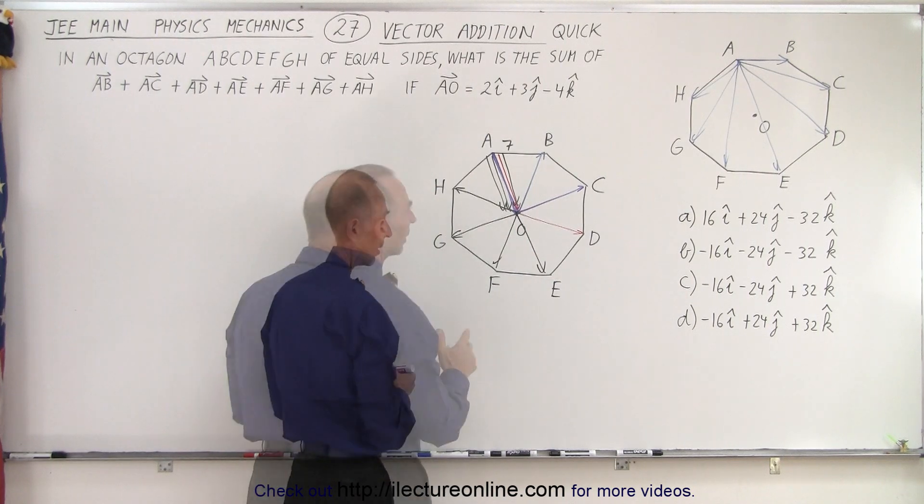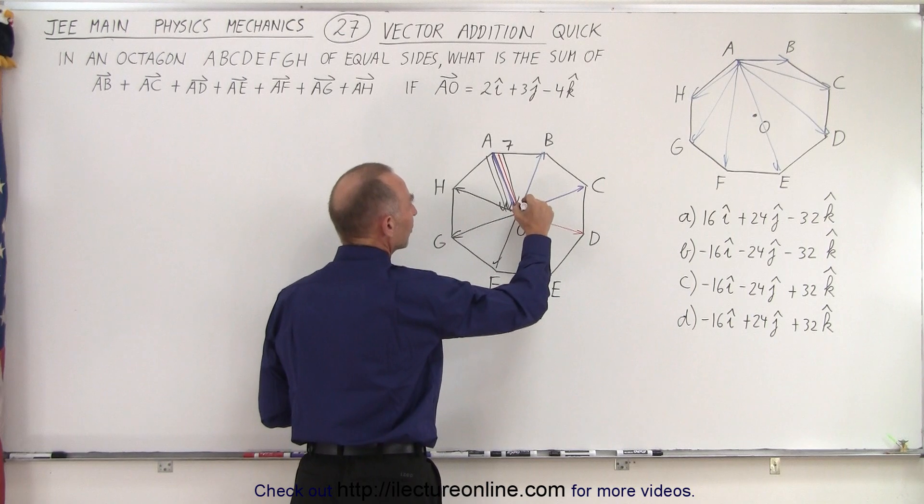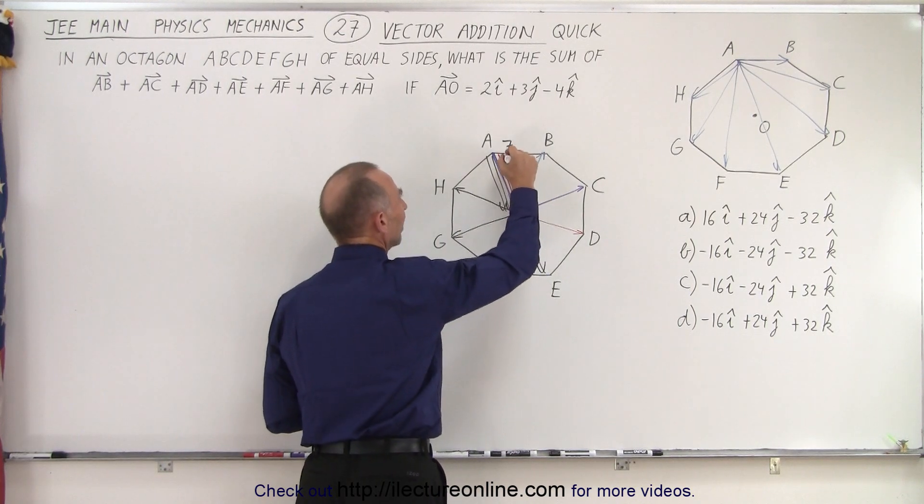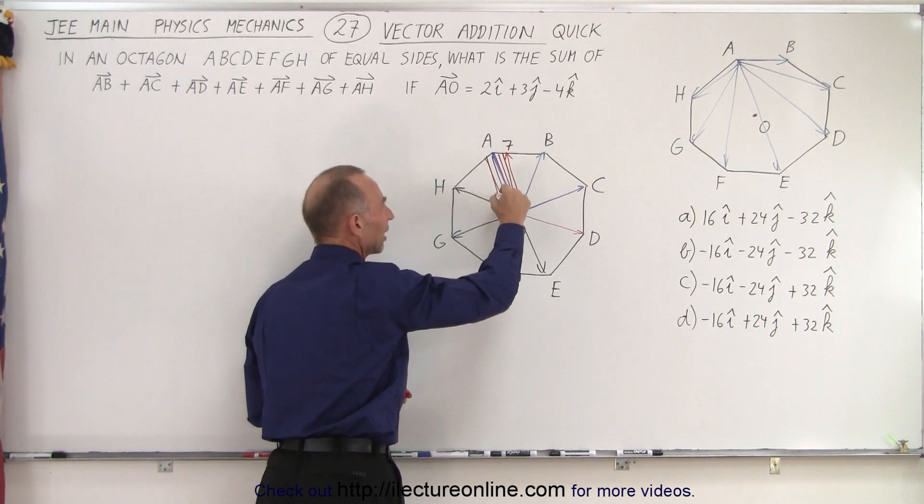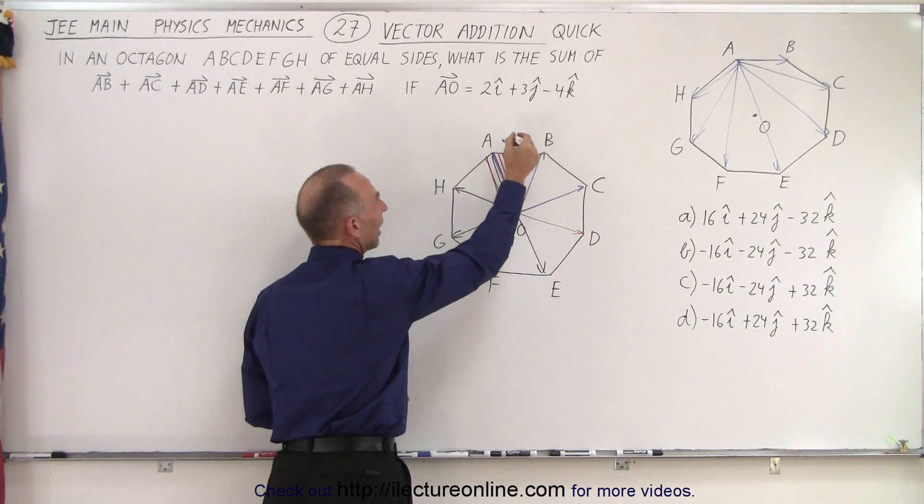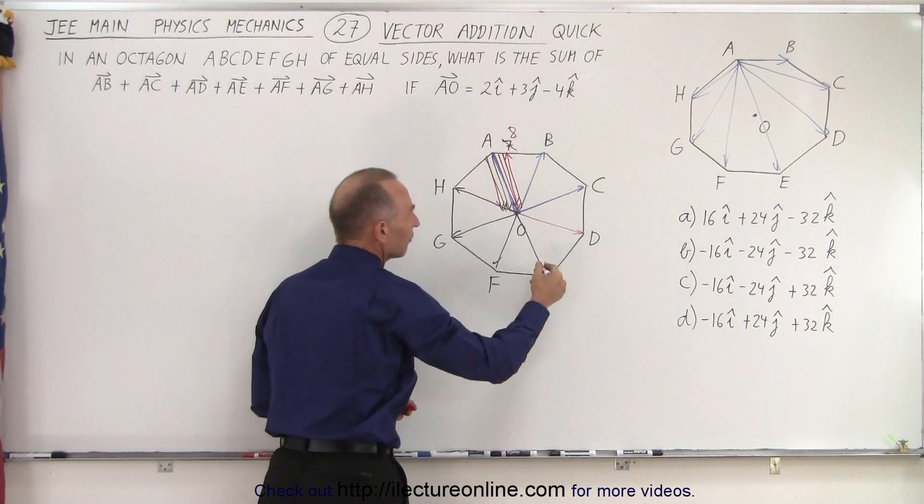Let me use red for that. So to cancel out E, I'm going to need one more vector in this direction. Of course I can't just arbitrarily add that. I must then also have another vector in the opposite direction to cancel that out. So instead of seven, I have eight vectors going from A to O and all the other vectors.